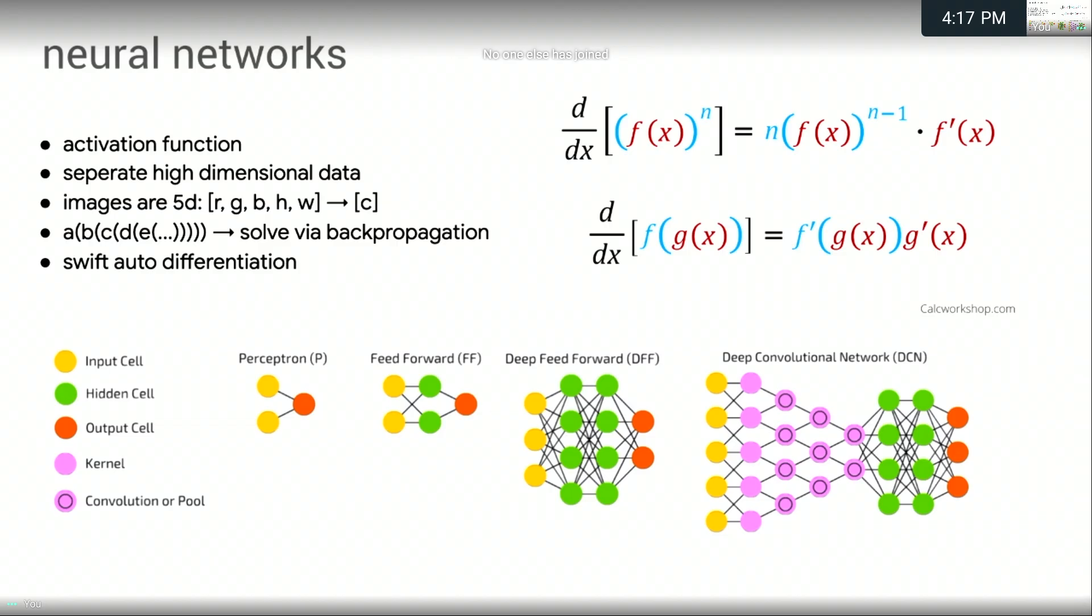You have three different color channels and then a height and width channel and then you're mapping it to some sort of category at the end. In order to solve these problems, we use a technique called backpropagation and then we often end up having to chain large quantities of functions together. So A applied to B, B applied to C, C, D, E and so on and so forth.